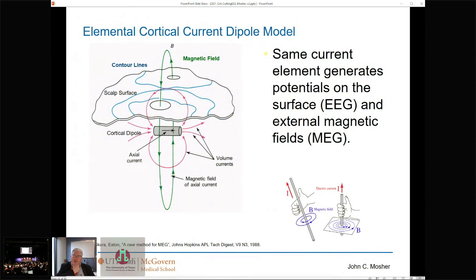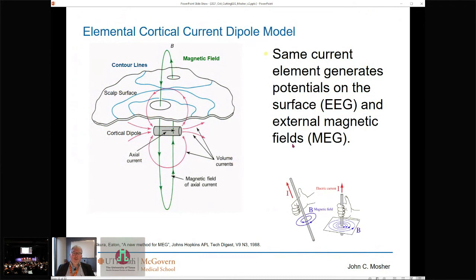A lot of medical students are taught somewhere in their training that EEG and MEG have different sources. But the emphasis from our modeling perspective is that they both have exactly the same primary generator — this primary drive at the elemental cortical level. We try to emphasize in our teachings that there is no difference in what drives scalp EEG and MEG.